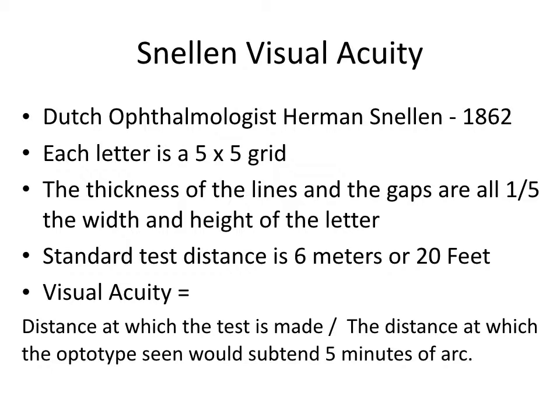The standard test distance everywhere but the United States is six meters; in the United States, it's 20 feet. Visual acuity is defined as the distance at which the test is made over the distance at which the optotype scene would subtend five minutes of arc — that's for the whole letter. Each part of the letter then would subtend one minute of arc.